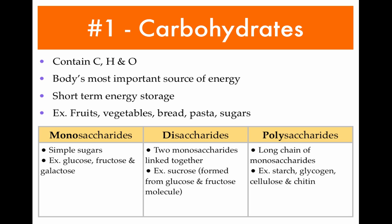Carbohydrates contain carbon, hydrogen and oxygen. They are considered the body's most important source of energy and are very good for short-term energy storage. So if you need energy very quickly, you would eat something high in carbohydrates. Examples could be fruits, vegetables, bread, pasta and sugars.